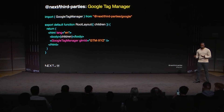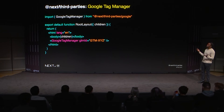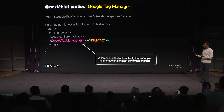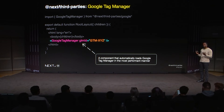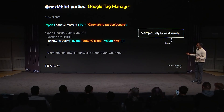So we decided to build on top of the script component and introduce a separate standalone library that makes this process much easier. Instead of figuring out all those details yourself, you can just import a Google Tag Manager component and automatically know it's going to load in the most performant manner. What's happening behind the scenes is nothing new or magical — it uses the script component, but we do the research to figure out when to load it for you. We also created a utility function to send events with Google Tag Manager.